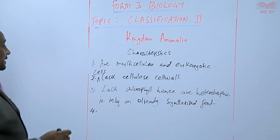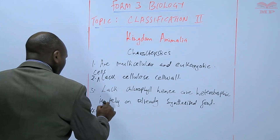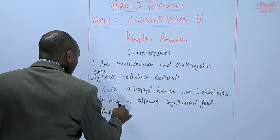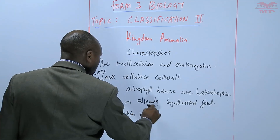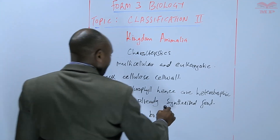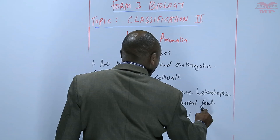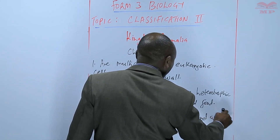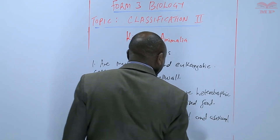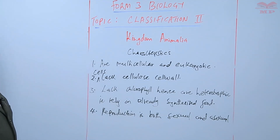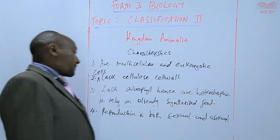In terms of reproduction, reproduction is both sexual — which is the main one — and asexual. We have a few cases that have asexual reproduction, where we don't have the use of gametes.